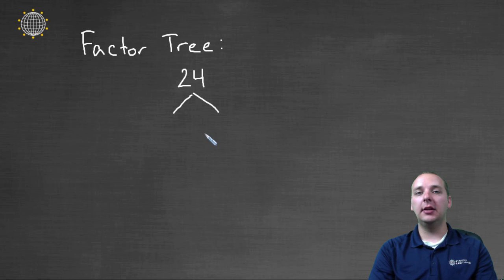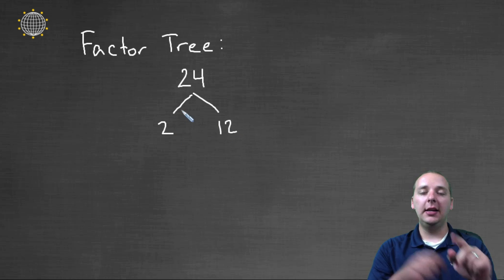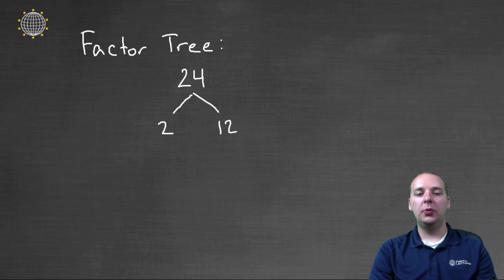So when I think of twenty-four, the first thing that comes to my mind is two times twelve. So I'll put a two on one branch, and I'll put a twelve on the other branch. Now if any of your branches end in a prime number, you can stop, and we'll circle it. So the two is done, there's nothing left to do. But the twelve on the other hand, you can continue to make another branch. For example twelve is two times six.